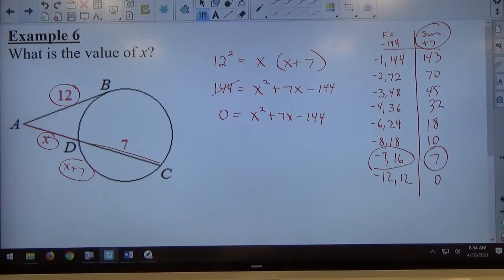The shortcut to doing that is you look at it and say I think negative 9 and 16 work and it does. If you happen to notice the pair of factors right off the bat you don't feel like you have to do the chart. If you can't find the pair of factors right off the bat then the chart will find the factors for you.